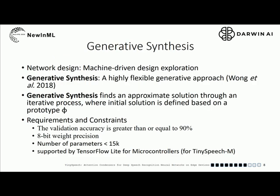To perform machine-driven design exploration, we incorporated the new attention condenser into generative synthesis. Generative synthesis is a highly flexible generative platform to create highly tailored deep neural network architectures. It can automatically determine the macro-architecture and micro-architecture design based on some operational requirements and constraints. For tiny speech networks, we passed four constraints to generative synthesis: accuracy should be greater than 90%, 8-bit weight precision should be used, number of parameters should be less than 15K, and for tiny speech M, an extra requirement of compatibility with TensorFlow Lite.